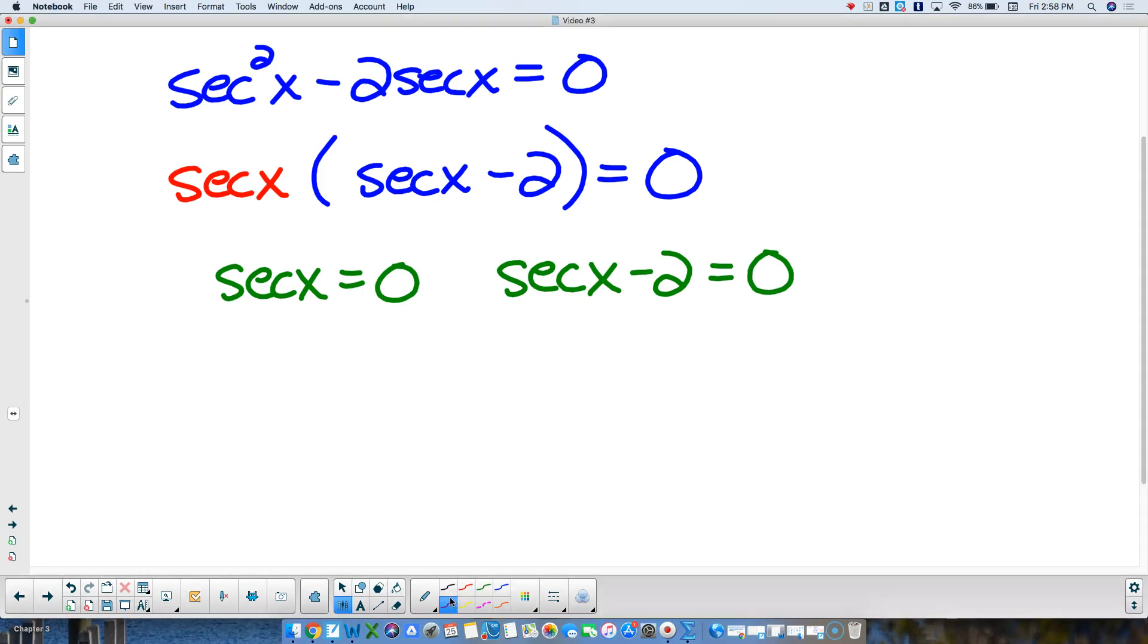So secant of x is 1 over cosine of x, and where that is equal to 0. Well, that fraction can't ever be 0 because the numerator is never 0. So this can't happen, so this is not possible.